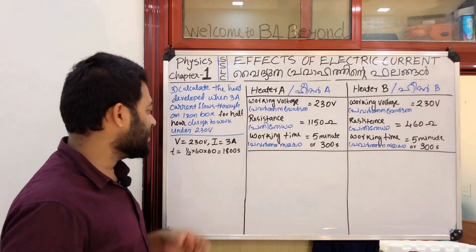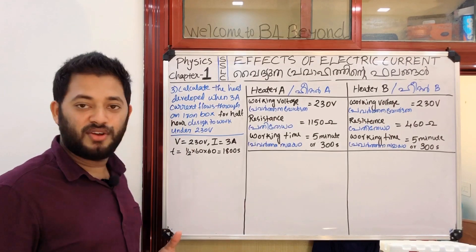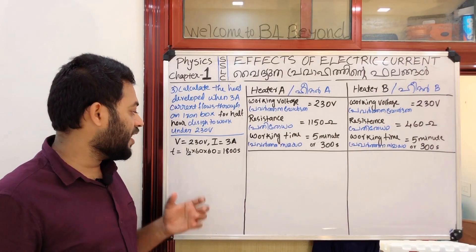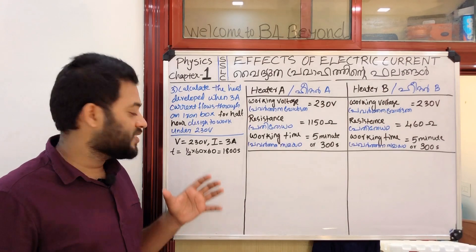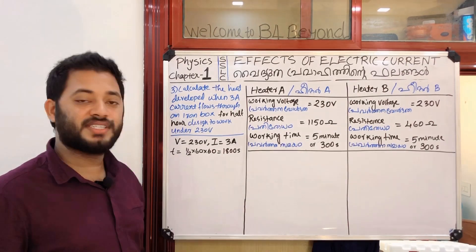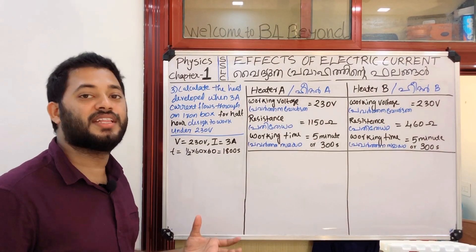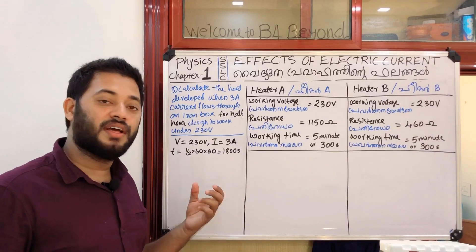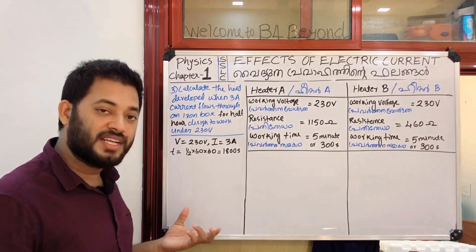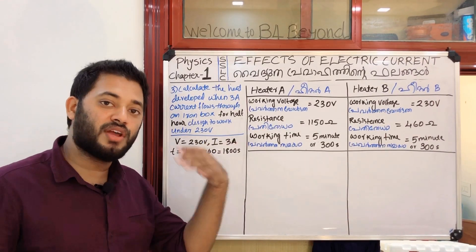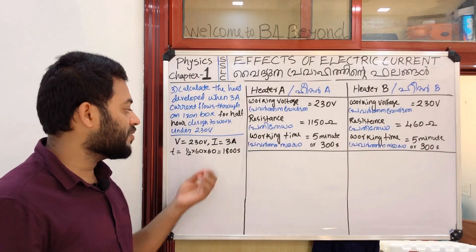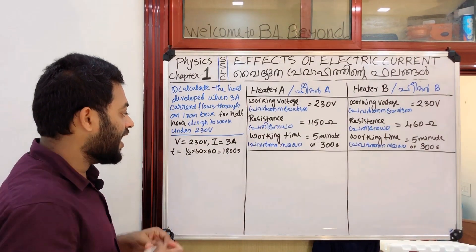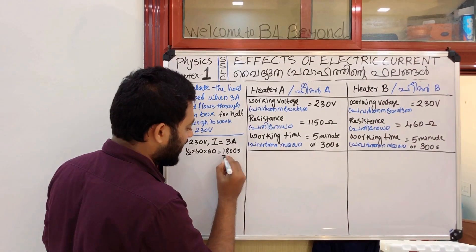The given data: V is equal to 230V, I is equal to 3A, T is equal to half hour. Half hour equals 30 minutes, which equals 1800 seconds.